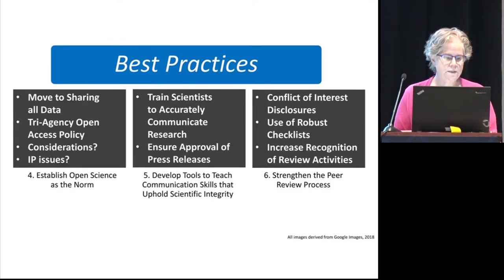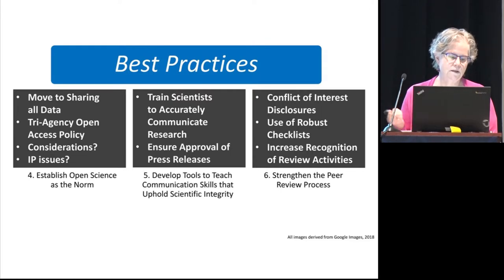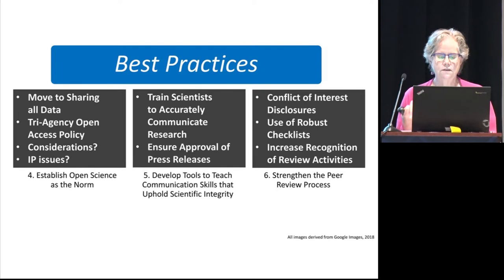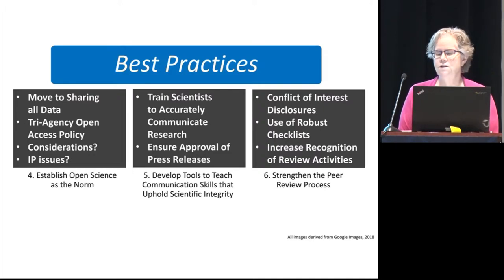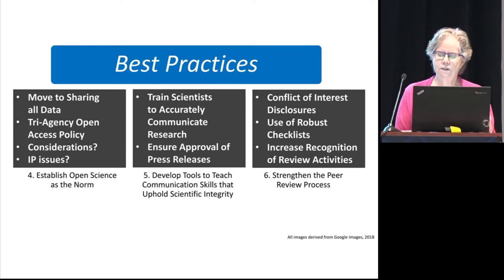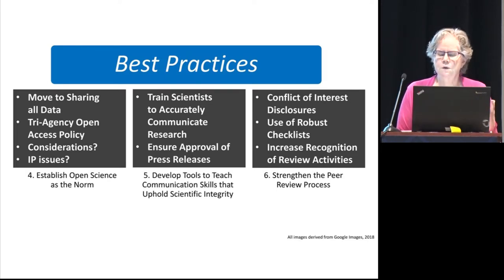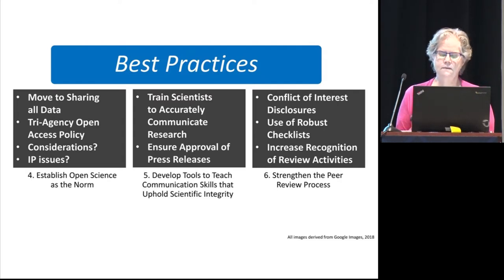Number four is to establish open science as the norm — data sharing and open access policies — though of course there are issues with things like intellectual property. Number five is to develop tools to teach communication skills to uphold scientific integrity. This involves a training component within science programs focused on communication of research. In food safety microbiology, we spend a lot of time figuring out how to accurately communicate concepts of risk and relative risk, and being able to communicate it accurately and in balance is a skill that's important to teach.